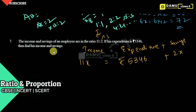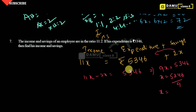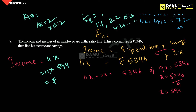Then 9x equals 5,346. Then x will be equal to 5,346 by 9, which gives x equal to 594. Then income is equal to 11x, that is 11 into 594, which gives total income equal to 6,534 rupees.